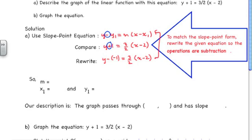From the rewritten equation, we can identify that our slope is 3/2, x₁ is 2, and y₁ is negative 1. The tricky part is getting x₁ and y₁ correct. Our description is: the graph passes through the point (2, negative 1) and has a slope of 3/2.